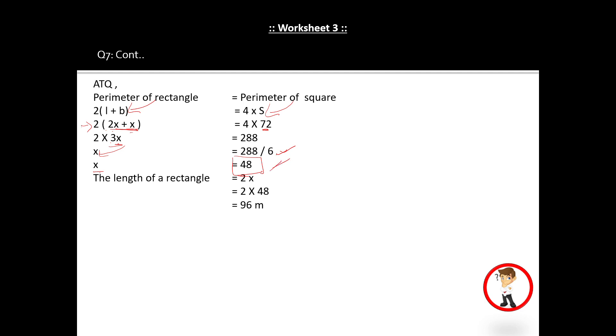We took x as breadth, so the breadth of the rectangle is 48 meters. And the length? We took length as 2x, so it will become 2 times 48, that equals 96 meters.